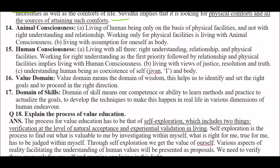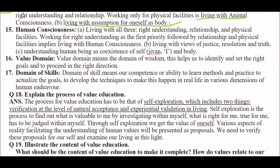Next term is 'Animal Consciousness.' Living as a human being only on the basis of physical facilities and not with right understanding and relationship — working only for physical facilities — is living with animal consciousness. This also includes the assumption of oneself as body only, not as 'I.' Next term is 'Human Consciousness.' Living with R3 — right understanding, relationship, and physical facilities. Working for right understanding as the first priority, followed by relationship and then physical facilities, implies living with human consciousness — living with views of justice, resolution, and truth. Understanding the human being as co-existence of self (I) and body.